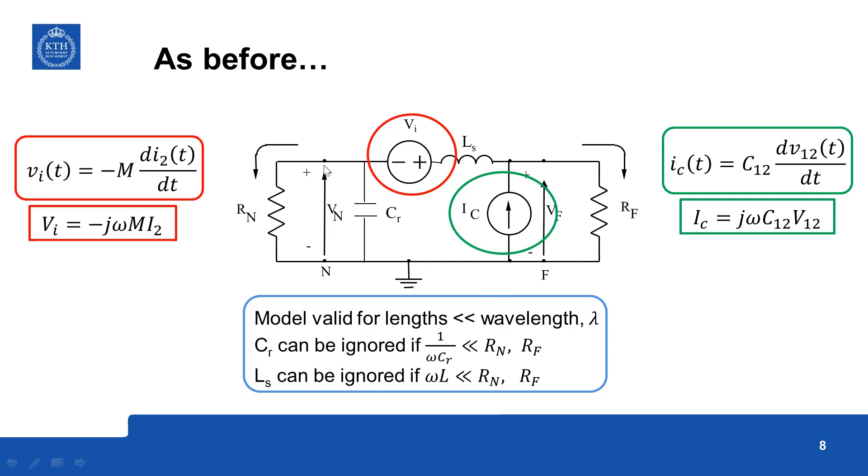So this is just a recap of what we have seen before for the near field. So the strategy is again to model the magnetic field interaction by a voltage source but without involving the mutual inductance and modeling the electric field interaction by a current source but without involving the coupling capacitance.